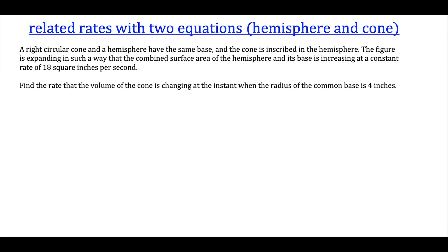What's up, I'm Vin, and today I want to solve a related rates word problem. We have a right circular cone and a hemisphere that have the same base, and the cone is inscribed in the hemisphere. The figure is expanding such that the combined surface area of the hemisphere and its base is increasing at a constant rate of 18 square inches per second. We need to find the rate of change of the volume of the cone at the moment when the radius is four inches.